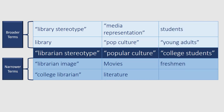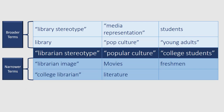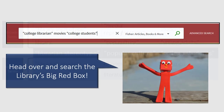Now we have a good selection of keywords and phrases and we can start searching the library for resources. Simply pick one term from each column and use them in the library's big red box. For example, college librarian, movies, and college students.